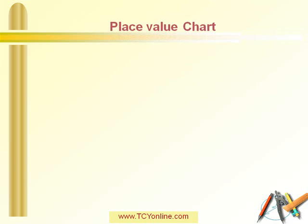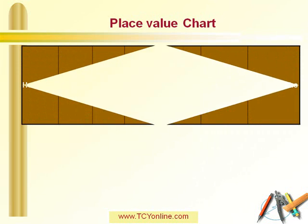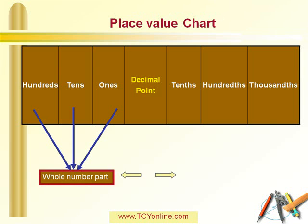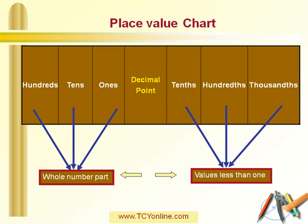Now let's look at the place value chart for decimal numbers. In a decimal number, to the left of the decimal point we have the whole number part — so 1s, 10s, and 100s represent the place values for the whole number part. While to the right of the decimal point we have tenths, hundredths, and thousandths, which are the numbers whose values are less than 1. So tenths, hundredths, and thousandths are the place values for the decimal numbers.